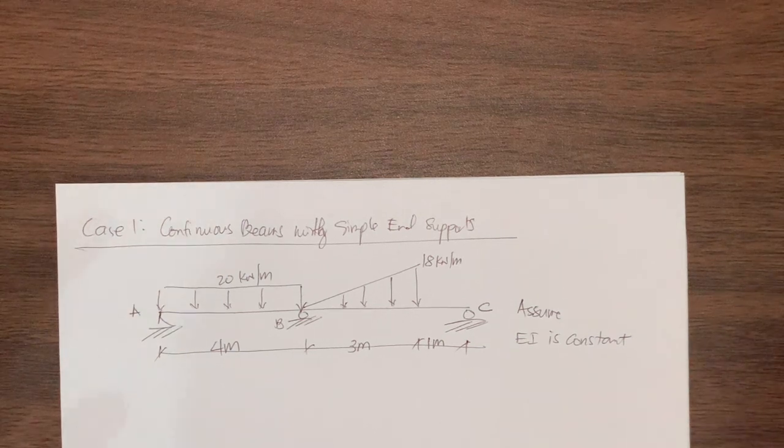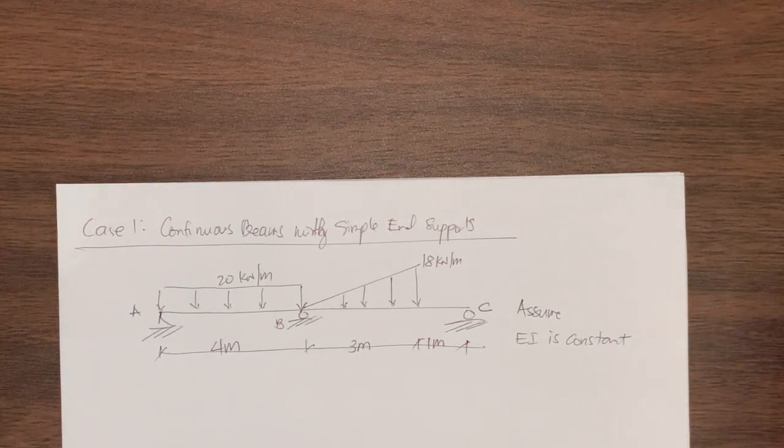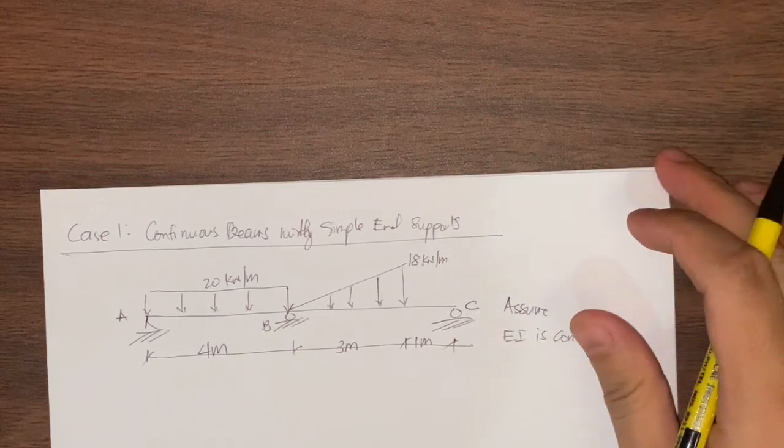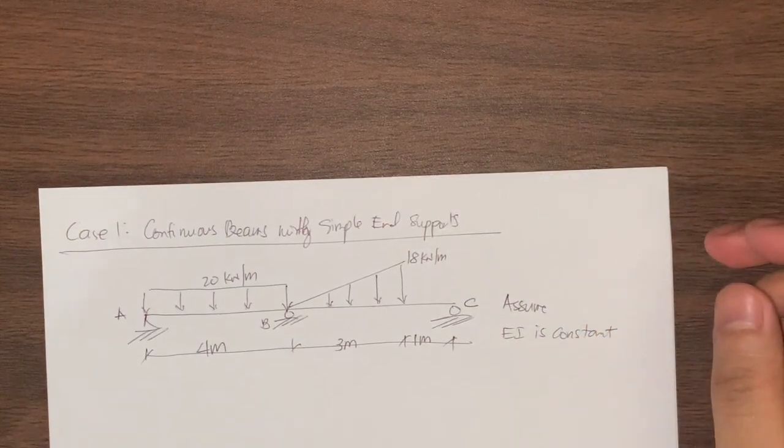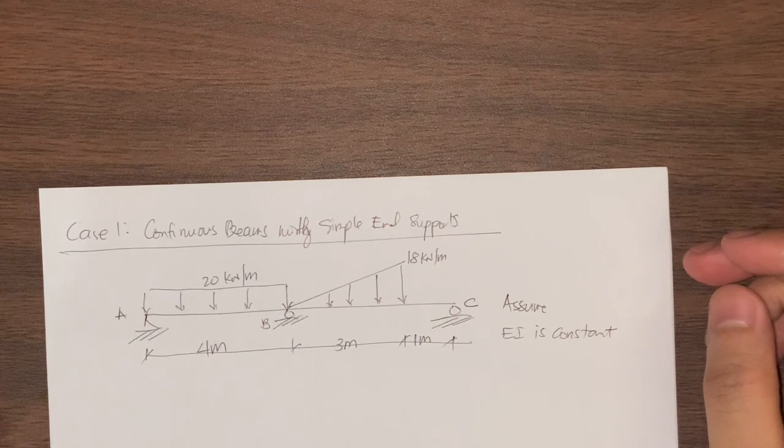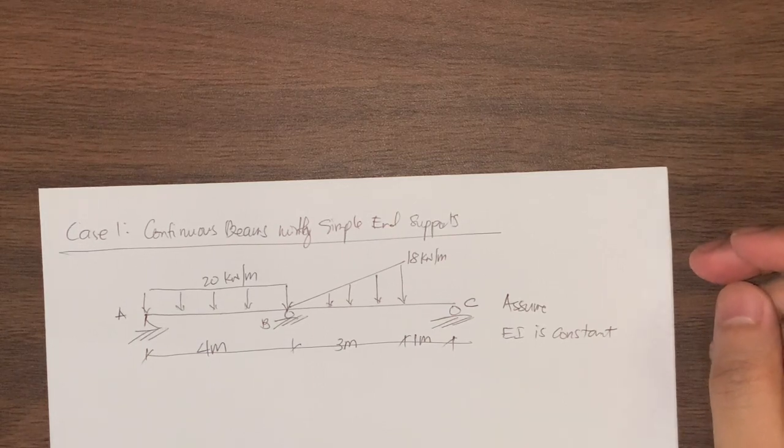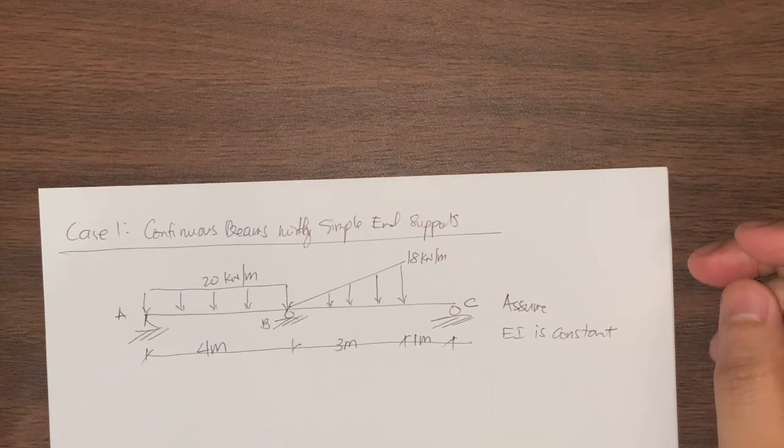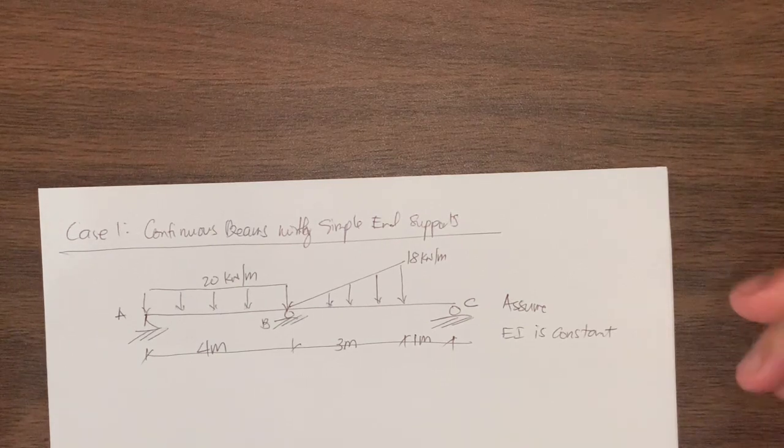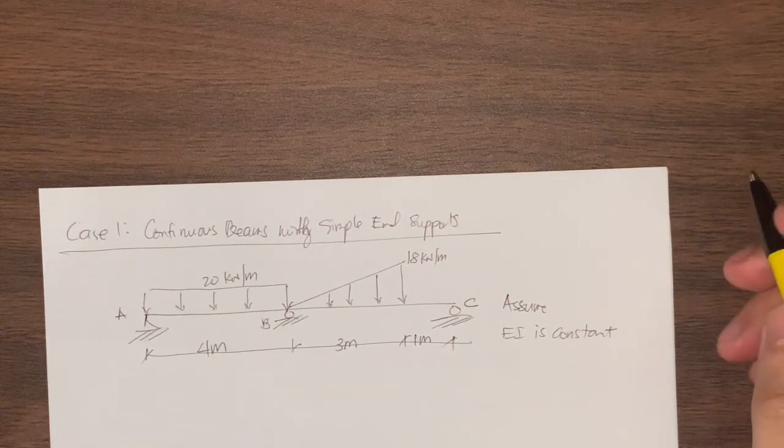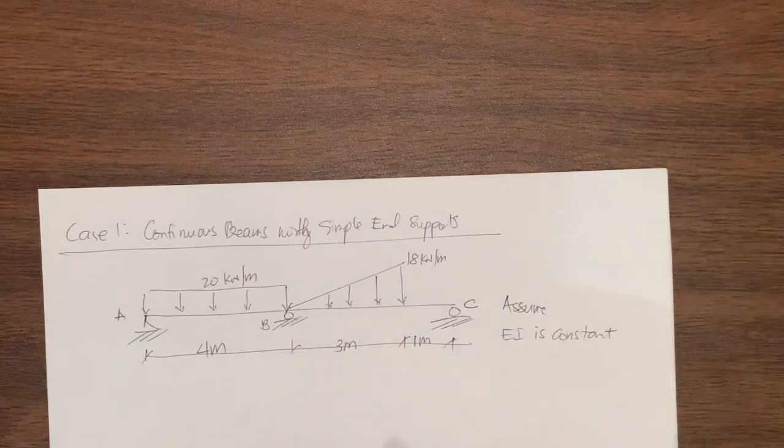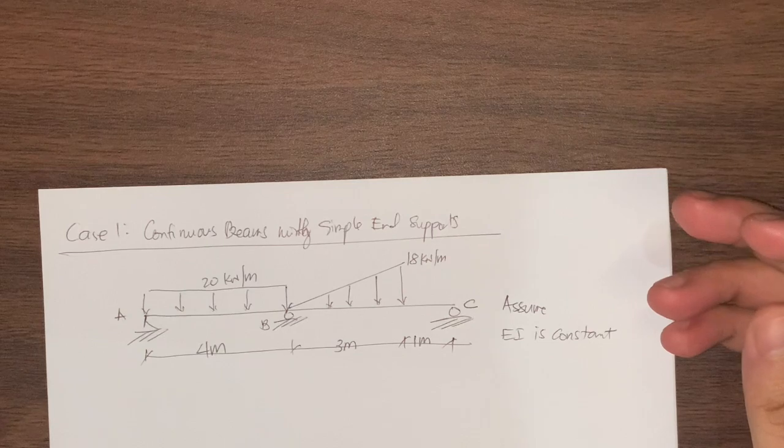This is a continuation of our discussion. I will now be giving you an example about the three-moment equation. Remember last time we discussed I will be dividing it into two cases. Case 1 is regarding a continuous beam with simple end supports, and case 2 is a continuous beam where the end supports are fixed.